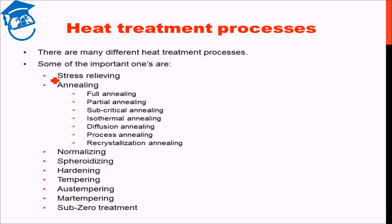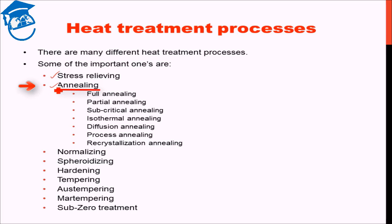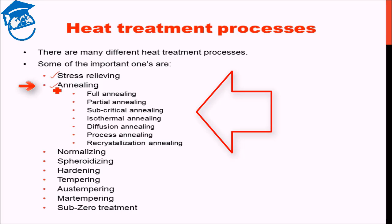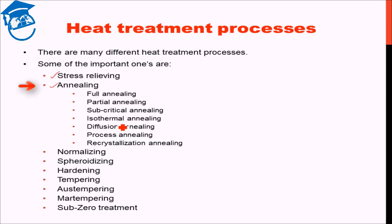Some of the important ones are stress relieving — stress relieving involves no microstructural change as such, but the heat treatment relieves the stress within the material. Then we have annealing, which is of multiple types: full annealing, partial annealing, subcritical annealing, isothermal annealing, diffusion annealing, and recrystallization annealing.